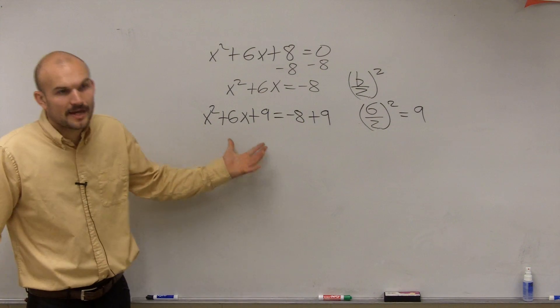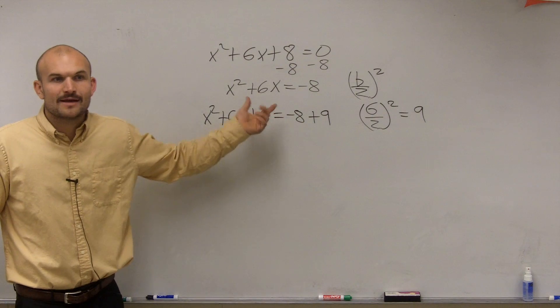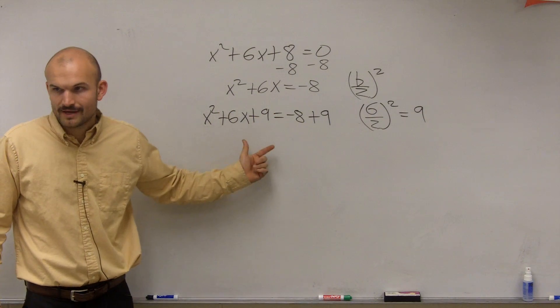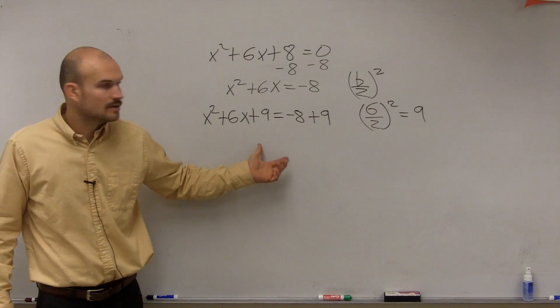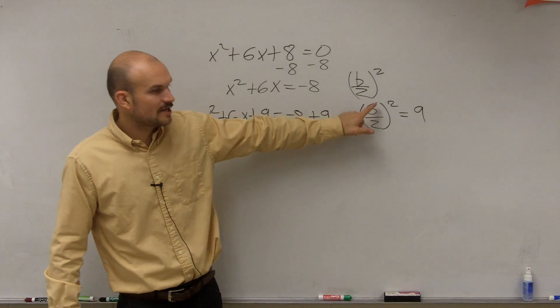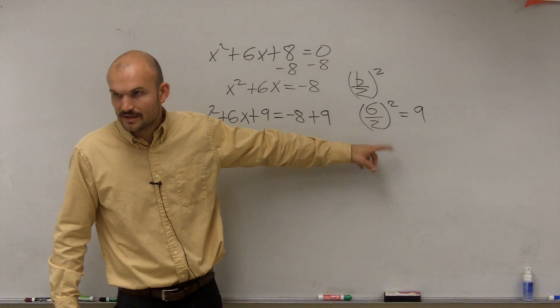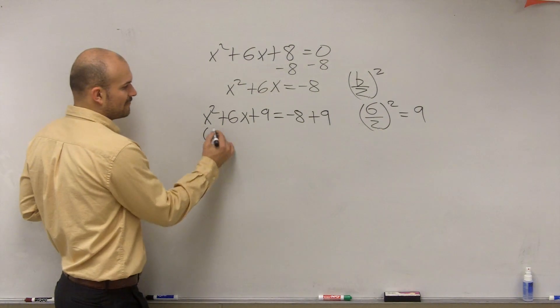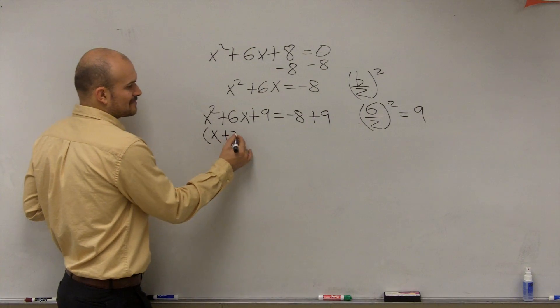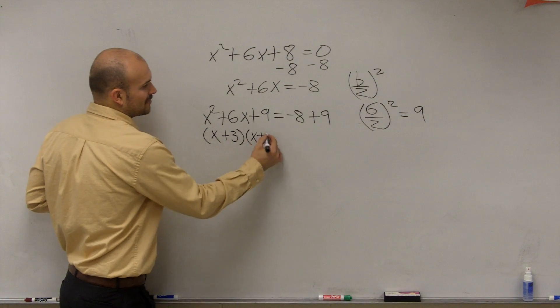So now I created a perfect square. So I need to say, well, what is this perfect square then? I created a perfect square trinomial. What is the perfect square? Well, what you can do is you could always take whatever b divided by 2 is, and that's actually going to be part of your perfect square. So if I was to rewrite this, I can factor this back out into x plus 3 times x plus 3.